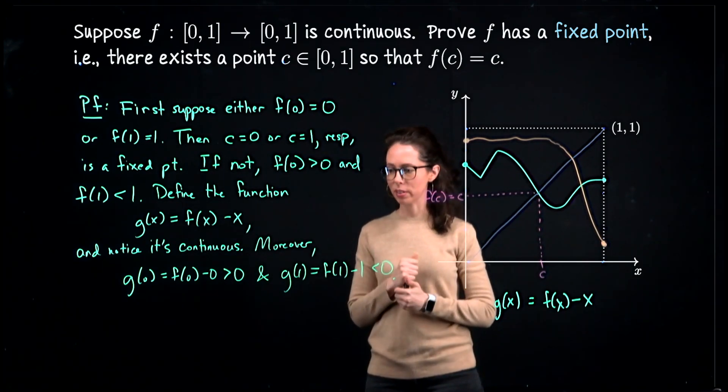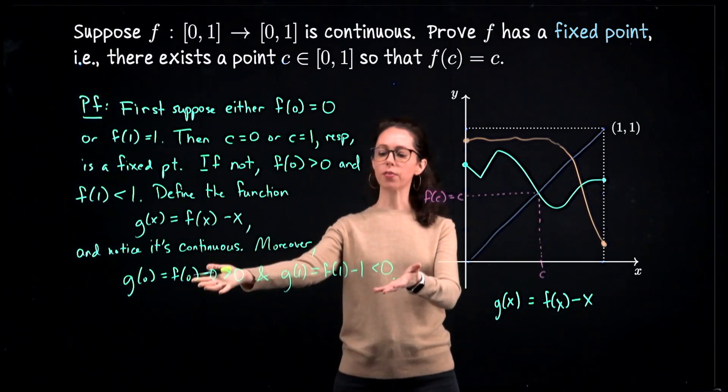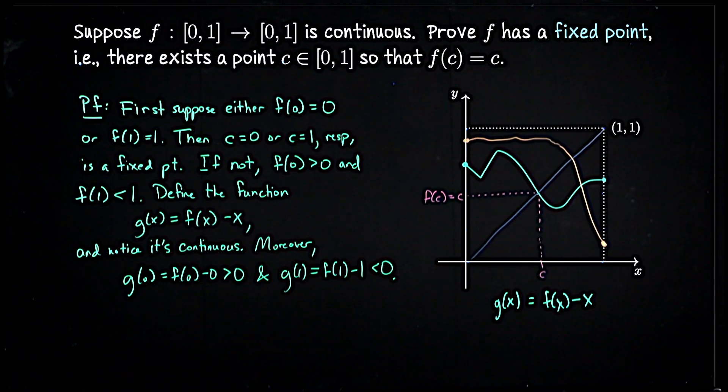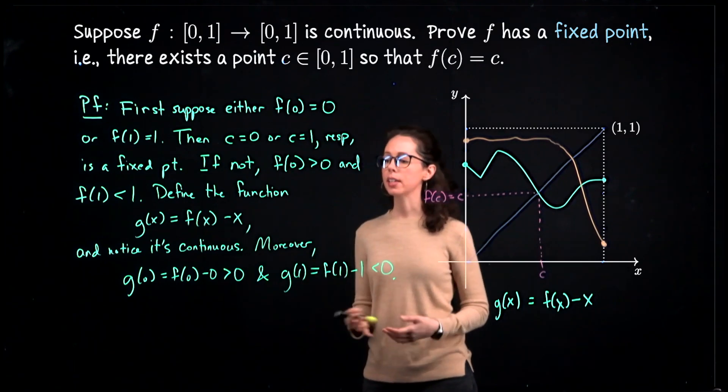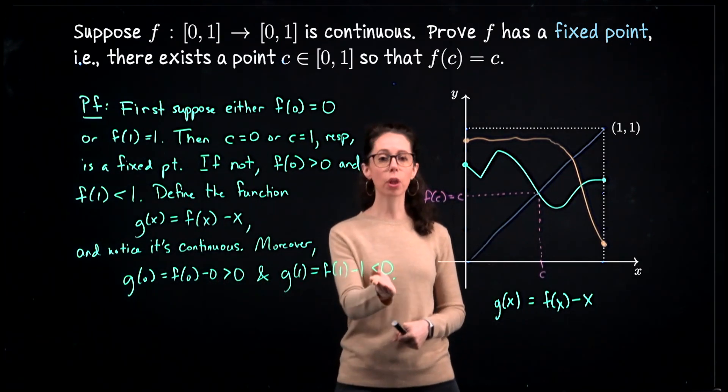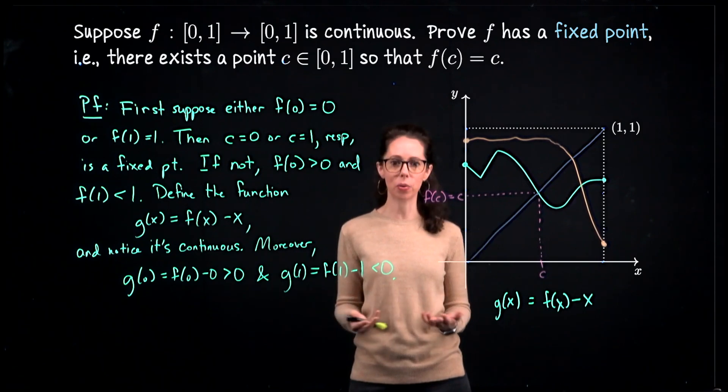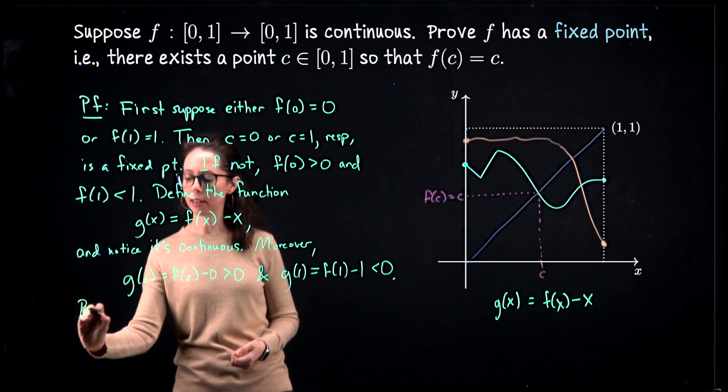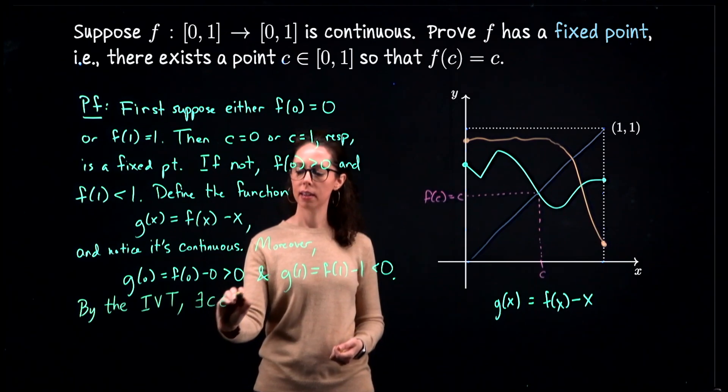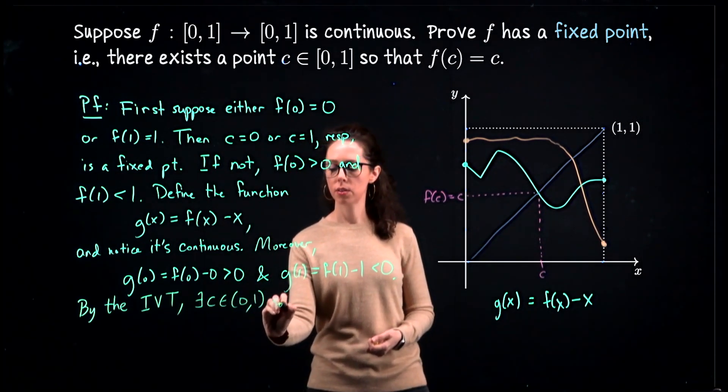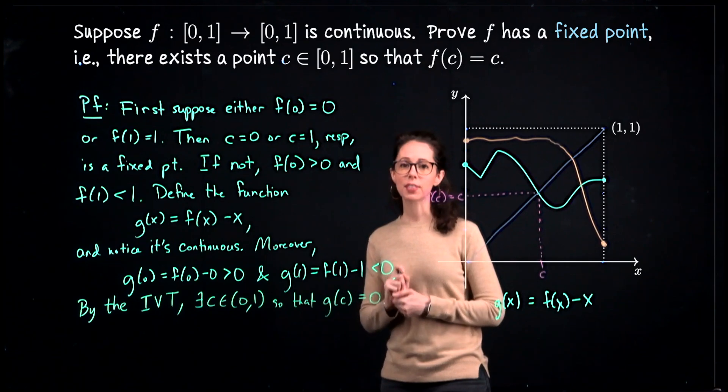Moreover, let's see what happens when we plug in zero and one. So g(0) = f(0) - 0, which by hypothesis is positive. That again is just measuring here that our function is above the line. And g(1) = f(1) - 1, which if f(1) < 1, f(1) - 1 < 0. Again, detecting that our function is below the line. So this is really like figuring out who's above and who's below.